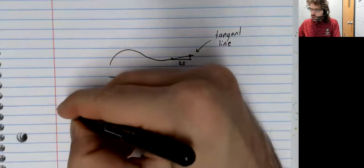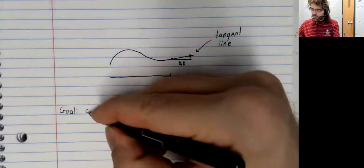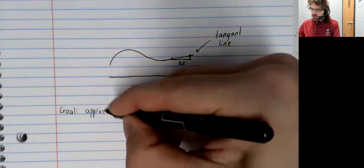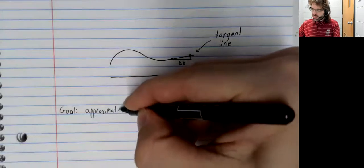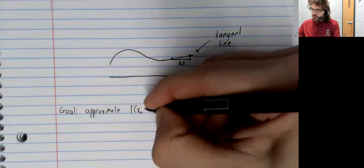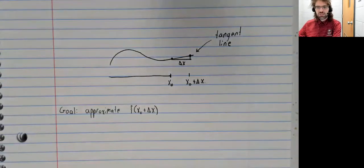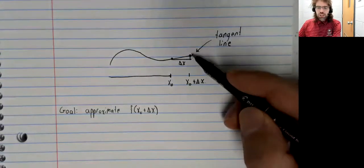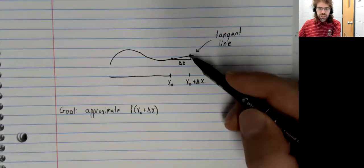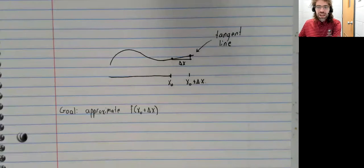This value we're looking at is then x sub zero plus delta x. And our goal, restated a little, is to approximate f of x sub zero plus delta x. And we've already done that using the tangent line and the linearization. At least graphically, we've done that. I haven't written an approximation down.